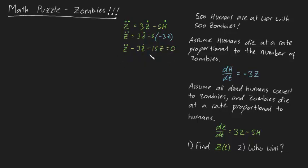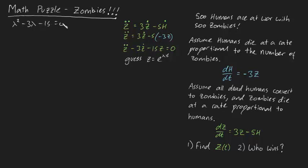That second order differential equation is Z double dot minus 3Z dot minus 15Z equals zero. To solve this, we need to guess a solution. I'm going to guess Z equals e to the lambda t. When we plug this guess into the equation we're left with the characteristic equation: lambda squared minus 3 lambda minus 15 equals zero, and this shows that there are two real roots.